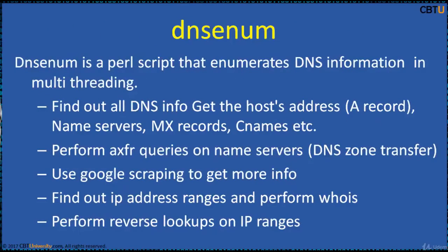DNSRecon is a Perl script that enumerates DNS information. Its features include getting the hostname address, A records, nameservers, MX records, and CNAMEs. It can perform AXFR queries on nameservers — that is, DNS zone transfers. DNS zone transfer is used to replicate the DNS databases across a set of DNS servers. It uses Google scraping to get more info, find IP address ranges, and perform queries. DNSRecon comes by default with Kali Linux and is also available from GitHub.